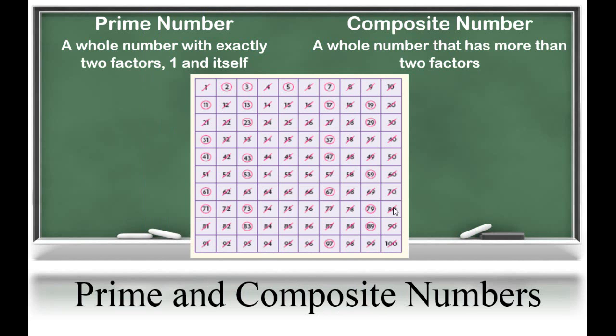Finally, in this unit, students will learn prime and composite numbers. A prime number is a whole number with exactly two factors: one and itself. A composite number is a whole number that has more than two factors. You can see on this chart all of the circled numbers are the prime numbers that are less than 100. Students will use their divisibility rules and knowledge of factors and multiples to determine if a number is prime. It is important for students to have a firm understanding of factors, multiples, prime and composite numbers, and divisibility rules, so in the next unit they are able to write equivalent fractions and tell if a fraction is written in its simplest form.